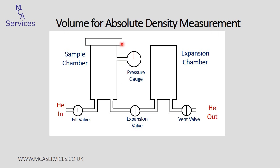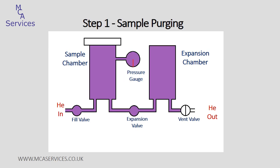We'll start off by running through how the AccuPyc actually works. It has two chambers: the first is the sample chamber, where the sample is housed; the second is the expansion chamber, which is a very precisely known volume. It also has three valves — a fill valve, an expansion valve, and a vent valve — which are used in sequence to control the flow of helium through the instrument. There's also a pressure gauge located on the sample chamber.